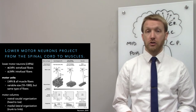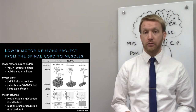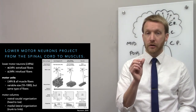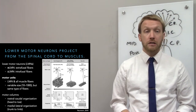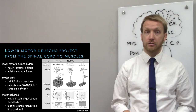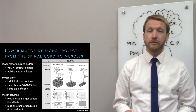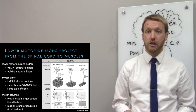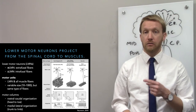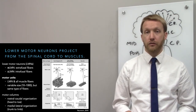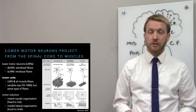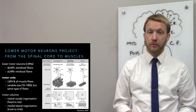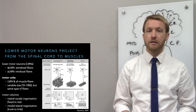Lower motor neurons innervate individual muscle fibers. Each lower motor neuron innervates a variable number of muscle fibers — that number is called the motor unit. A motor unit is a single lower motor neuron and all the muscle fibers it innervates. Small motor units generate very little force and are helpful for fine movements, while large motor units create much greater force and are helpful for powerful movements. Small motor neurons tend to innervate slow twitch fibers, while large motor neurons tend to innervate fast twitch fibers. The size principle allows us to recruit small motor neurons first and then larger ones for smooth movements.